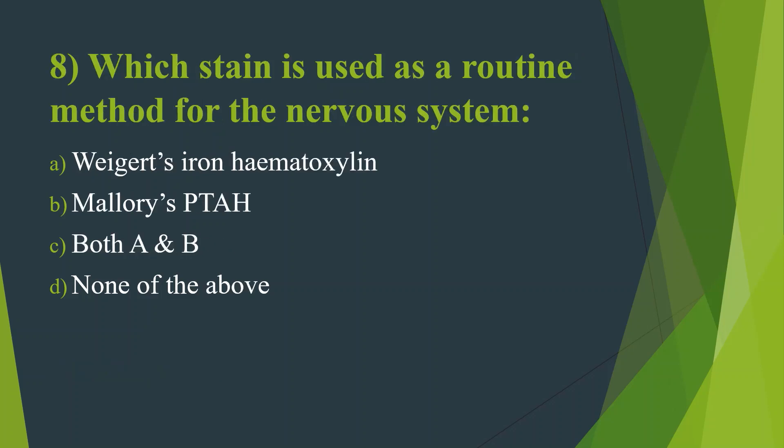Eighth question: Which stain is used as a routine method for the nervous system? Option A: Weigert's iron hematoxylin. Option B: Mallory's PTAH. Option C: Both A and B. Option D: None of the above. Here the answer is Option B — Mallory's PTAH, that is Mallory's Phosphotungstic Acid Hematoxylin. Mallory's PTAH is used for diagnosing muscle cross-striations and fibrin, and for nervous system tumors such as choroid plexus papilloma and ependymoma.